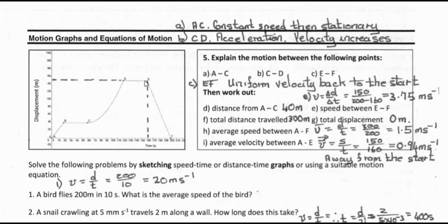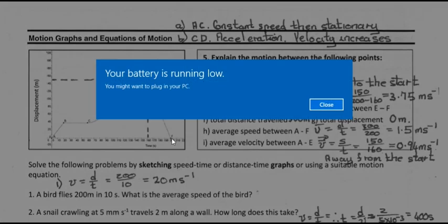From D to E, the displacement is again constant, just like in B to C. And in E to F, the displacement is decreasing, which means the velocity is negative — it's going back to where it started.